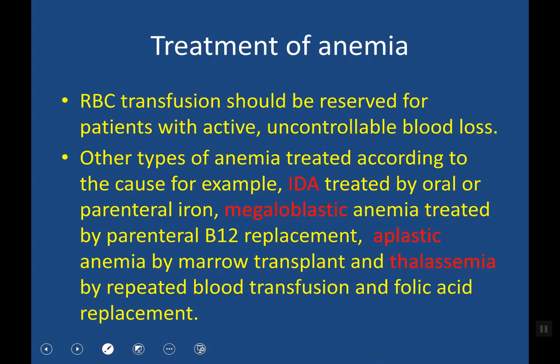Treatment of anemia depends on the type. Patients with iron deficiency anemia need iron replacement, either oral or parenteral, after correction of the underlying cause such as peptic ulcer. Patients with megaloblastic anemia are replaced with B12 vitamins. Patients with aplastic anemia are treated with immunosuppressive agents or definitively by bone marrow transplant. Patients with thalassemia are treated with repeated blood transfusions and folic acid replacement, with bone marrow transplant as the definitive treatment. Blood transfusion in anemia should be reserved for those with active uncontrolled blood loss; otherwise, the underlying cause should be corrected rather than relying on transfusion.